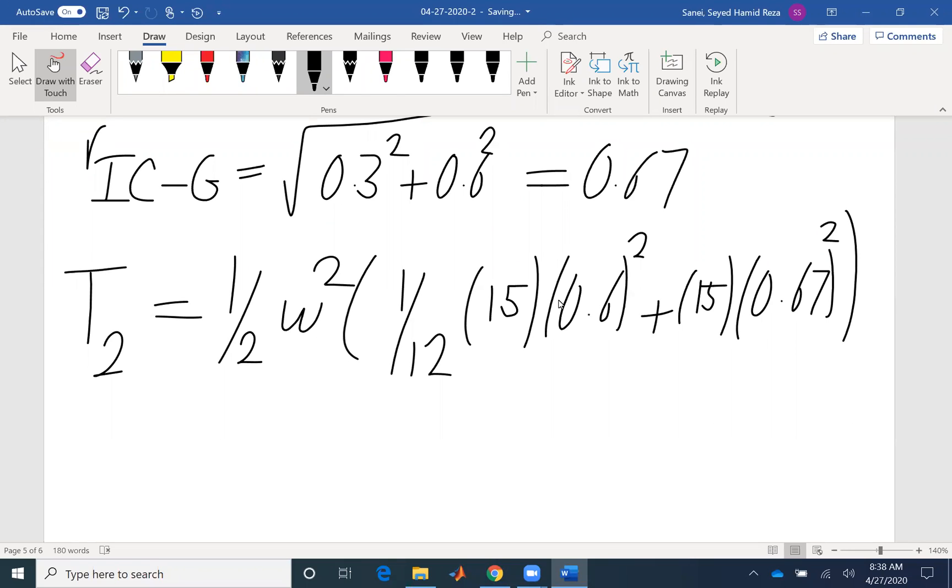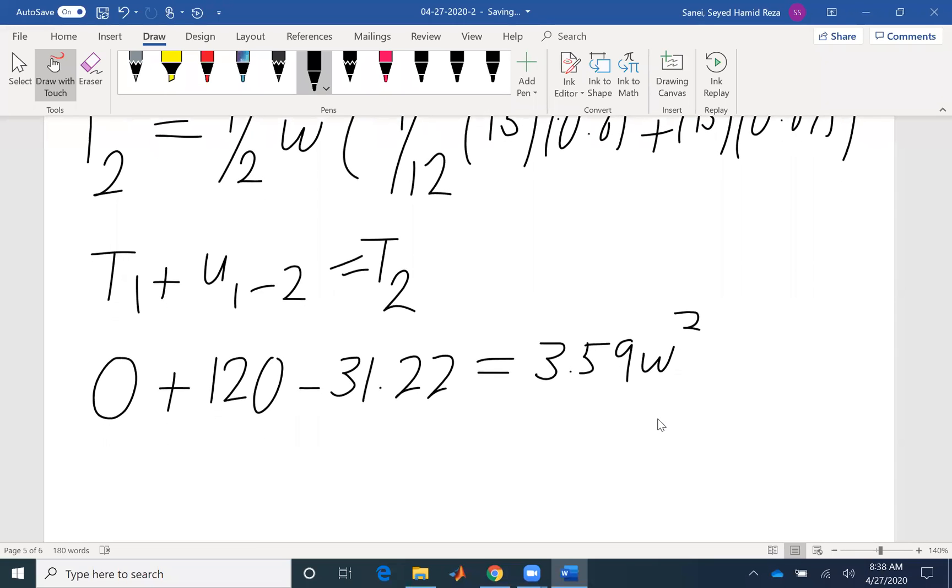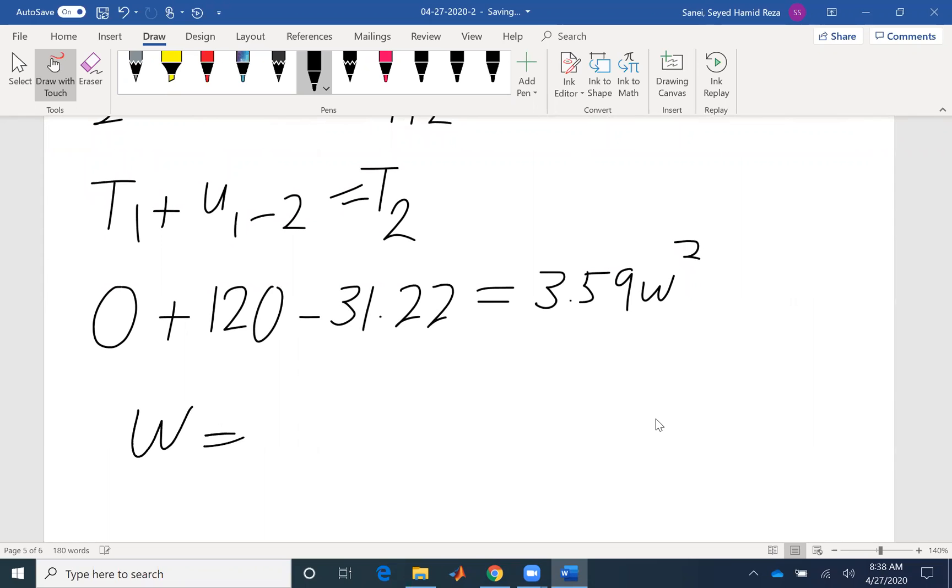But the only unknown would be omega. If I write T1 plus U_12 equals T2, here is 0. U_12, I had two components: 120 was the positive one, the work of the force; negative 31.22, the work of the weight. Also the final kinetic energy, which would be based on the angular velocity of the rod. The only unknown is omega. So that would be 4.98 radian per second, omega 2.